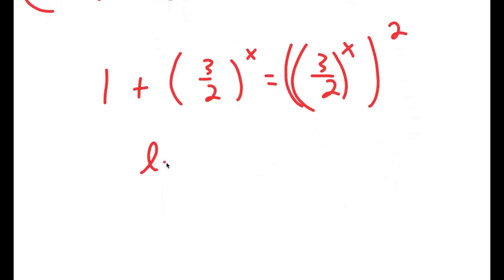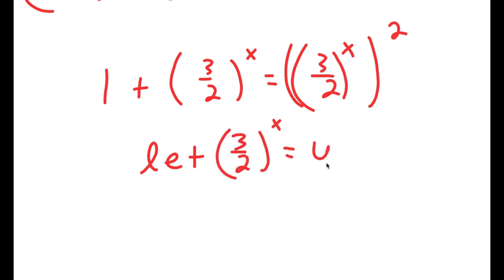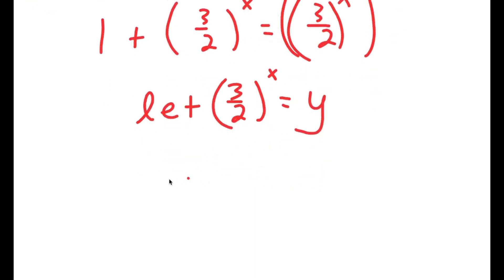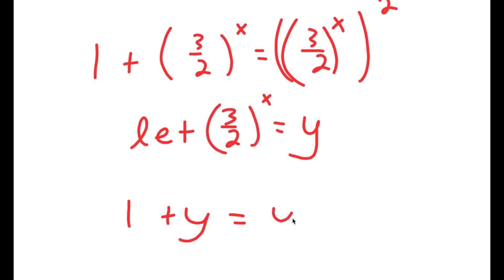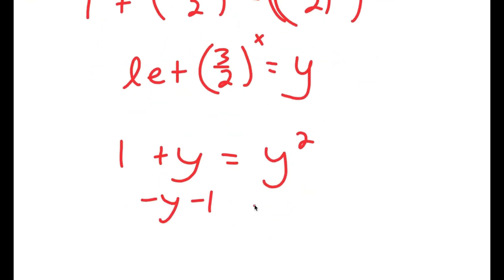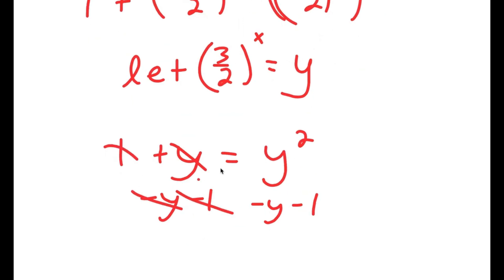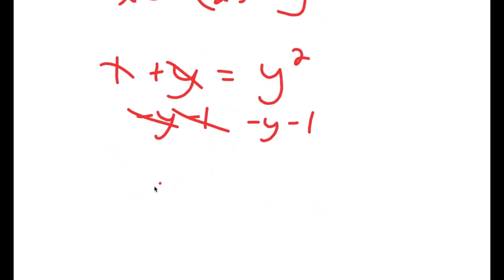Now I'm going to let y equal (3/2) to the power of x. So I get 1 plus y equals y squared. Subtracting y and 1 from both sides, I get y squared minus y minus 1 equals zero.